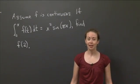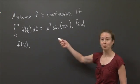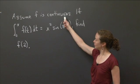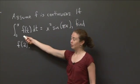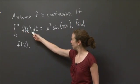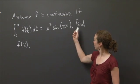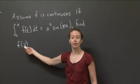Welcome back to recitation. In this video, I want us to work on the following problem. We're going to assume little f is a continuous function. And if we know that the integral from 0 to x of f(t) dt is equal to x squared sine pi x, I want us to find little f of 2.